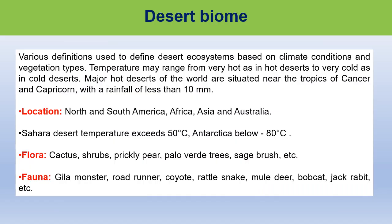Desert biome. Various definitions are used to define desert ecosystems based on climate conditions and vegetation types. Temperature may range from very hot, as in hot deserts, to very cold, as in cold deserts. Major hot deserts of the world are situated near the tropics of Cancer and Capricorn, with a rainfall of less than 10 mm. Desert biome is located in North and South America, Africa, Asia, and Australia. The temperature of the Sahara exceeds 50 degrees Celsius, whereas Antarctica is a cold desert below minus 80 degrees Celsius. Based on variation of climate, plants like cactus, shrubs, prickly pear, palo verde trees, sagebrush, etc. are found in desert biomes.